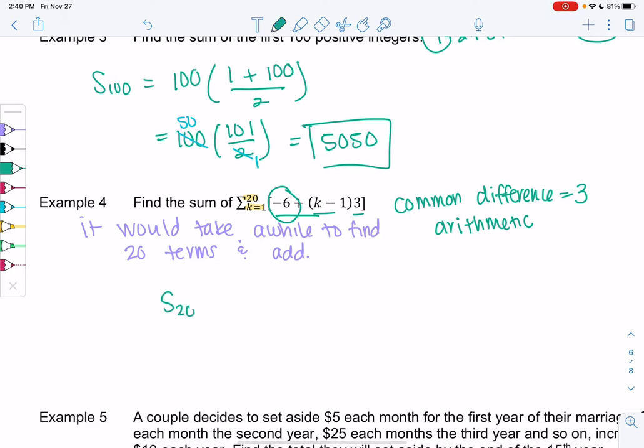This new shortcut formula is going to make this go a lot faster. So we're going to find S20 because we're finding 20 terms. And then we're going to do 20 times first term plus 20th term over 2.